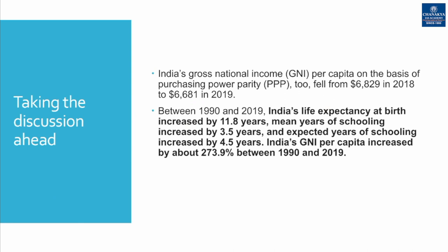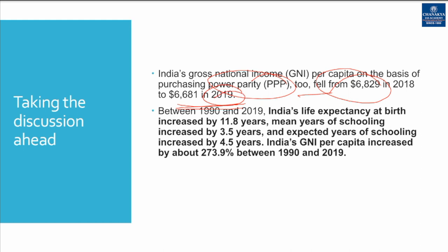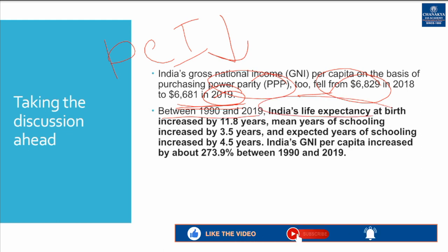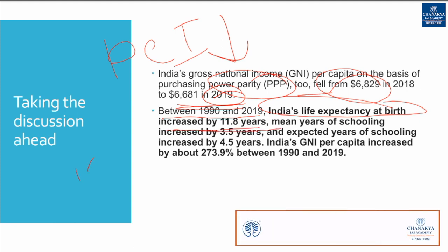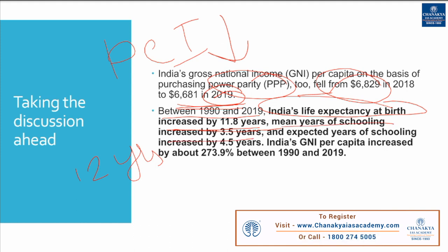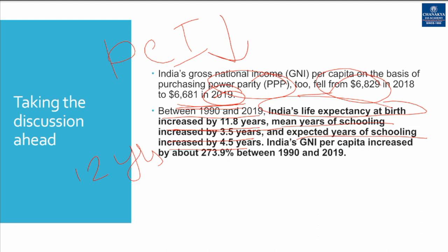India's gross national income per capita on the basis of purchasing power parity fell from $6,829 in 2018 to $6,681 in 2019, so per capita income is also falling. Between 1990 and 2019, India's life expectancy at birth increased by 11.8 years, mean years of schooling increased by 3.5 years, expected years of schooling increased by 4.5 years, and gross national income per capita increased by a very large amount.